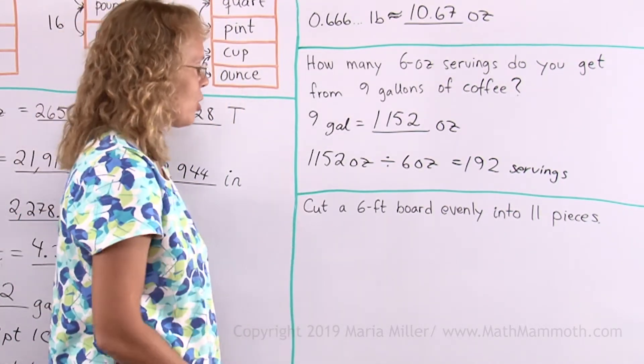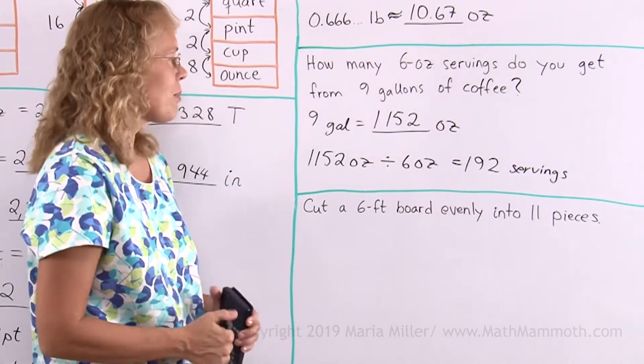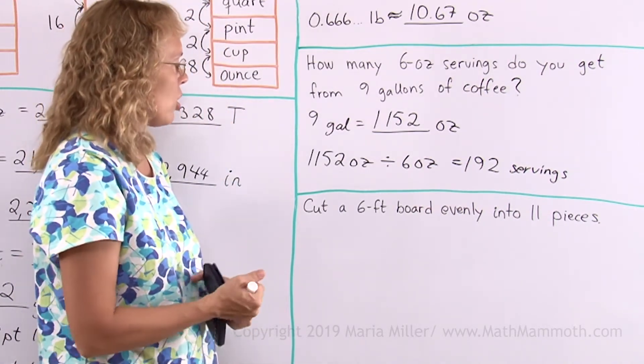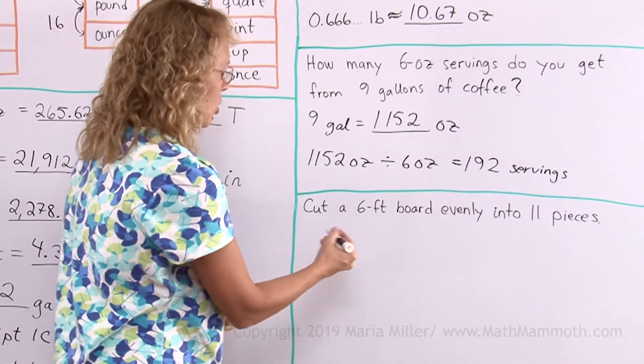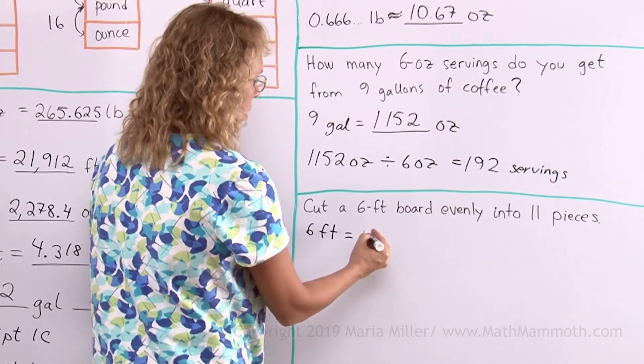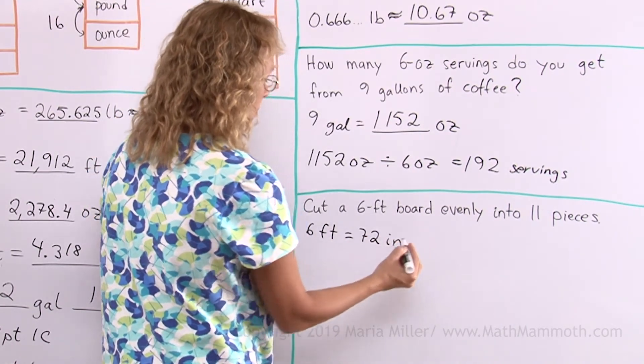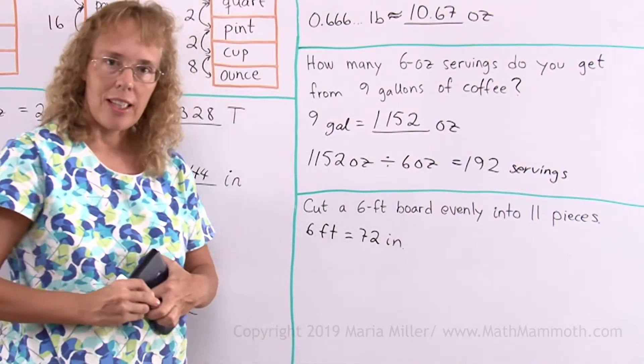Okay. I need to have my answer as so many feet and so many inches. But this is, of course, each piece will be less than one foot. So I just want inches. So many inches is my answer that I want. So I would convert this into inches, which is six times 12, 72 inches. And now I divide that by 11.